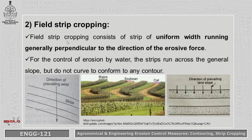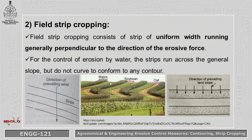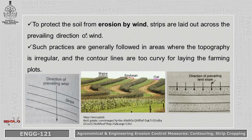The next type is Field Strip Cropping. It consists of strips of uniform width running generally perpendicular to the direction of the erosive force, which here means wind force. For control of erosion by water, the strips run across the general slope but do not conform to any contour. Uniform width is maintained for crops like maize, soybean, and oat. To protect from wind erosion, strips are laid out across the direction of wind, generally followed where topography is irregular and contour lines are too curvy.